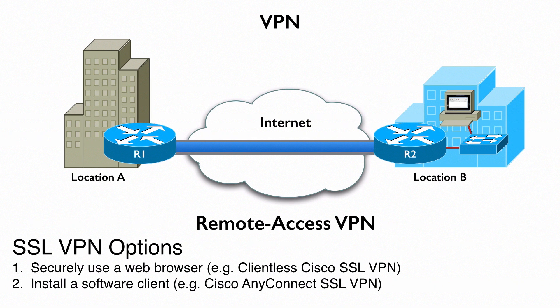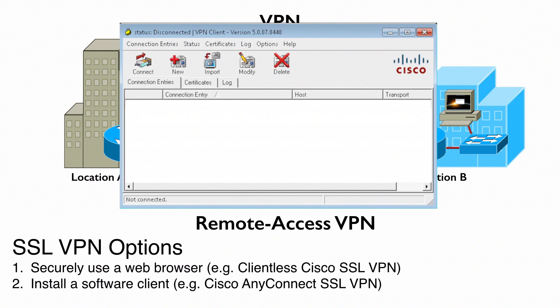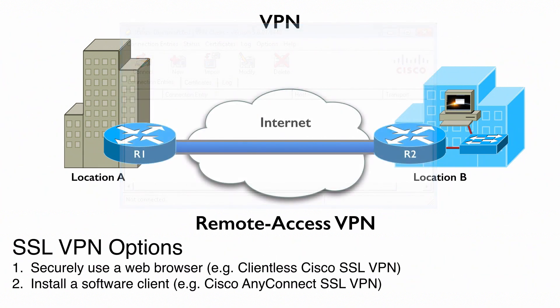Another option is to install some client software on that device — maybe the Cisco AnyConnect SSL VPN software. For years I've been running the Cisco VPN client on my machine to get back to my corporate office. The bottom line is we have different VPN client options; your operating system may come with a VPN client. But let's talk about the actual technology that is going to secure communication between these sites. The most popular way of doing this is to use something called IPsec, which is short for IP security.